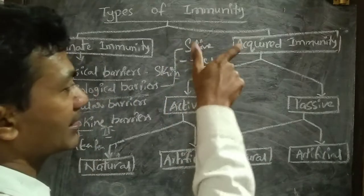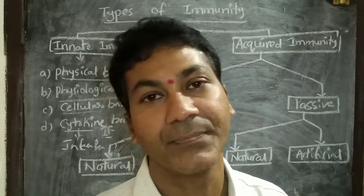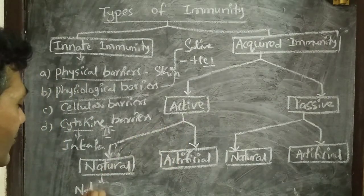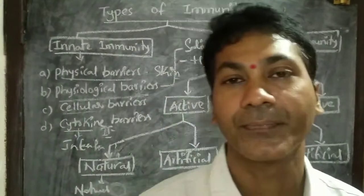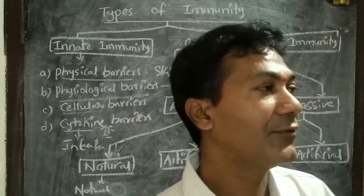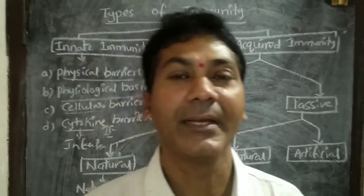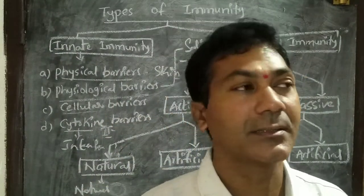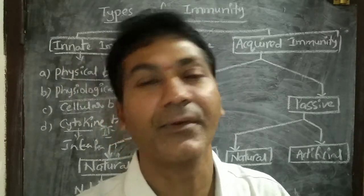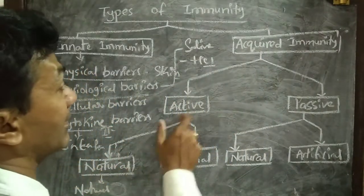Active acquired immunity is developed by an organism after birth. If that development of immunity occurs through natural infections, it is called natural active acquired immunity. For example, smallpox and chickenpox are diseases we may get only once in our lifetime. If we get the disease, we develop immunity that lasts for many days — even a lifetime. So if the same pathogen enters again, our body efficiently gets rid of it. This is natural active acquired immunity.